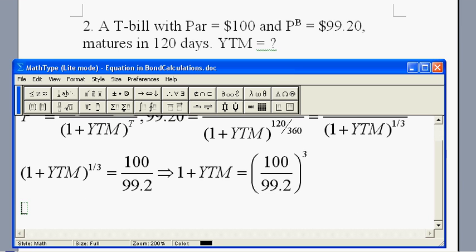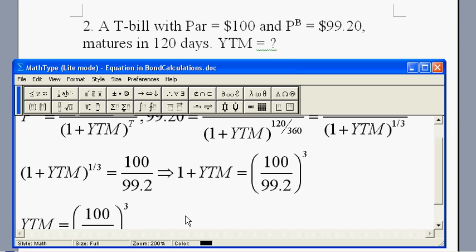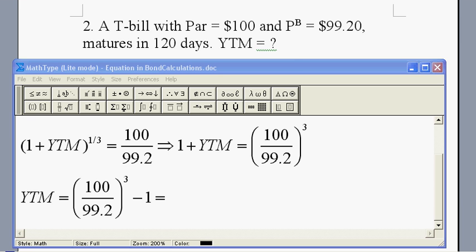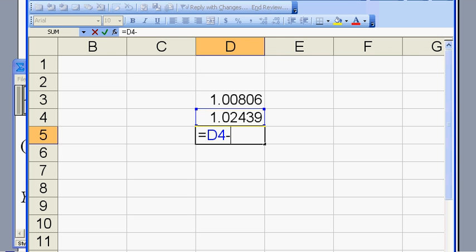Now, I'm ready to calculate the yield to maturity. What I have is, this ratio to the third power minus one. That will give me the number for the yield to maturity. To calculate this number, I need my Excel. And in Excel, I can calculate this ratio: 100 divided by 99.2. And then, I raise this number to the third power. And then, I got this number minus one. I got my yield to maturity.